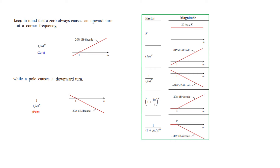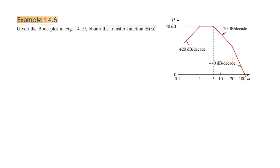Now let's go into the solved example from the book. Given the Bode plot of Figure 14.9, we need to obtain the transfer function H(ω). The book does it in one step, but I'll try to explain it more clearly first, then do it in one step as well.